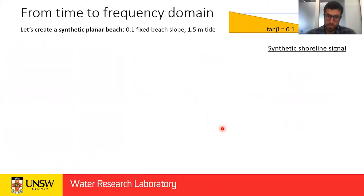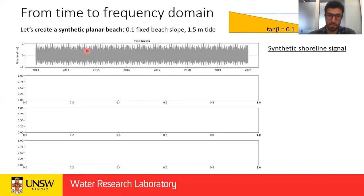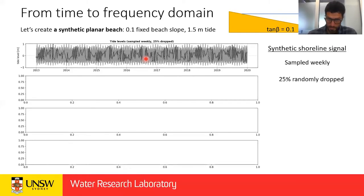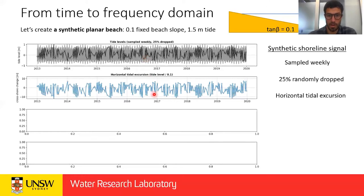So our idea was to move from the time domain to the frequency domain, and I'll use a synthetic case to explain how this works. We create a synthetic beach with a fixed slope of 0.1 and a 1.5 meter tidal range. We take the tide levels at this beach and subsample them as if sampled by satellite — weekly sampling — then randomly drop 25% of the data to simulate cloud cover. We then convert these tidal levels to horizontal tidal excursion along the profile by dividing by the beach slope.